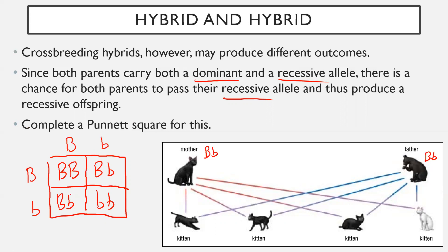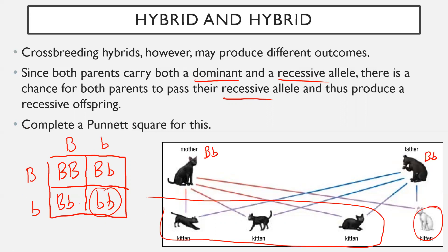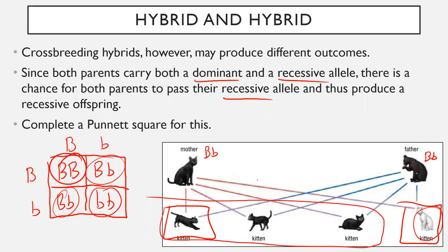Three out of the four offspring are going to be black, and one of the four is going to be white because it carries two recessive alleles — that is complete dominance. Even the ones with capital B and lowercase b still show up as black in terms of their phenotype. This is where the hybrid and purebred definitions fall apart: two hybrid cats produce some offspring that are genetically homozygous, or purebred. Homozygous and heterozygous make those distinctions better, though purebred and hybrid are still important terms to know.